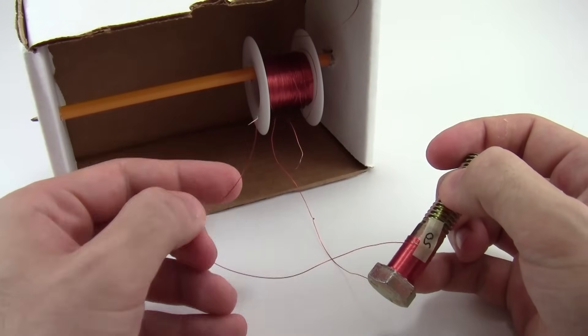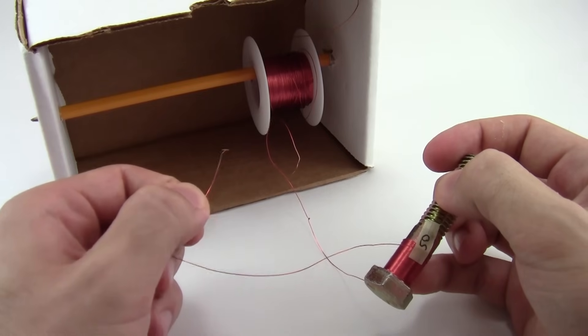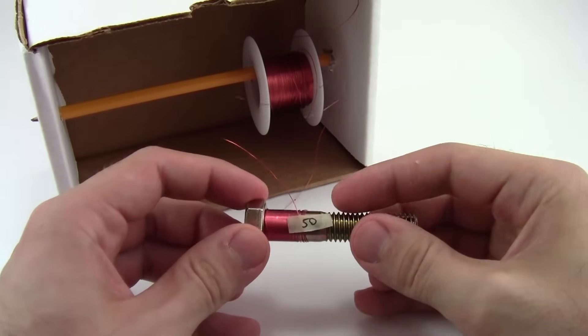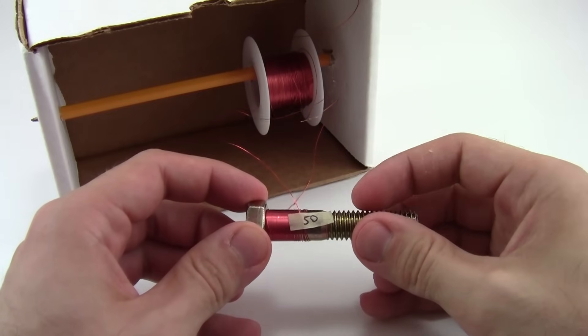When you've reached the number of coils you want, use scissors to cut the wire, remembering to leave some extra so it's easier to connect to the battery. Use another piece of masking tape to prevent the coil from unraveling and write the number of turns on the masking tape so you don't forget.